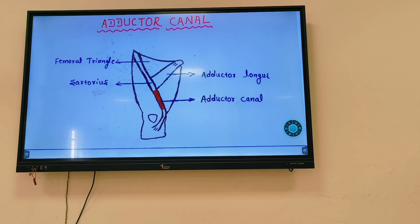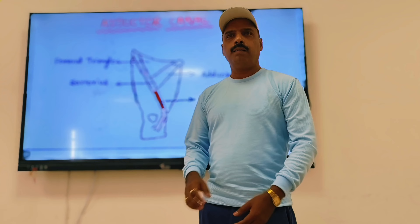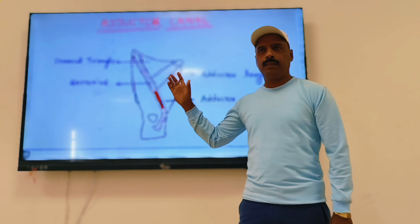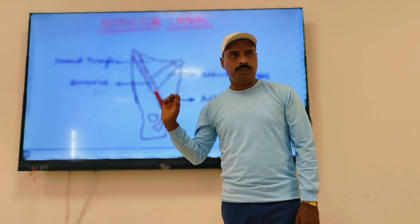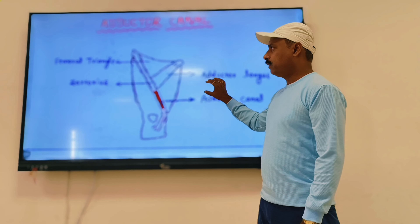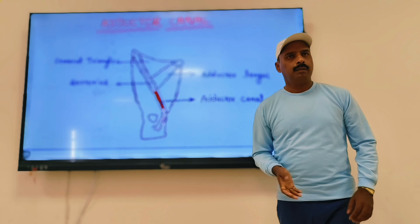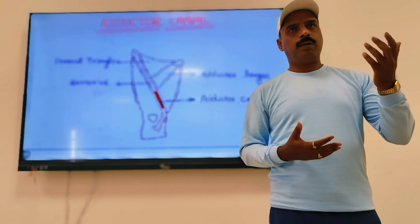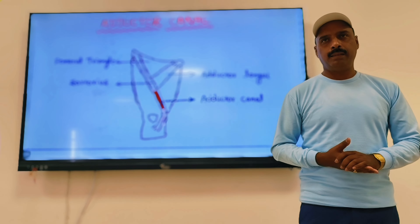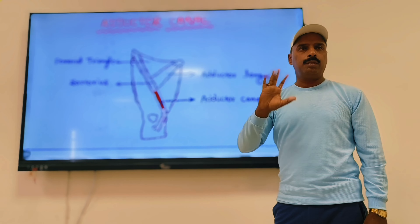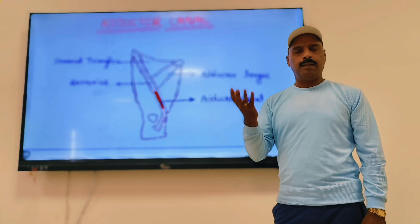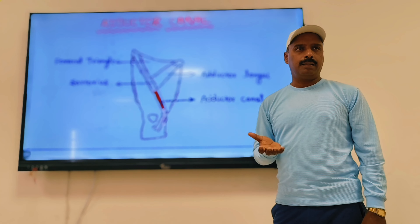The adductor canal is the next topic which is asked, usually as a short note question. Having come across the femoral triangle and femoral sheath, we are now going to deal with one more small but important topic. Every alternate question paper has either the femoral triangle, femoral sheath, or the adductor canal.